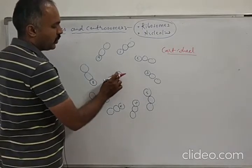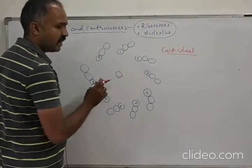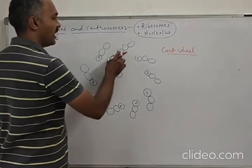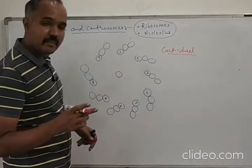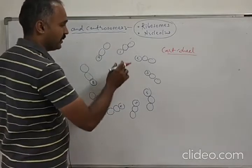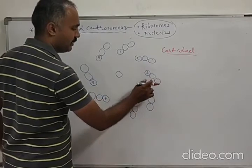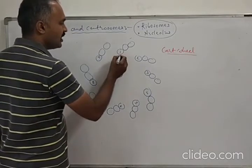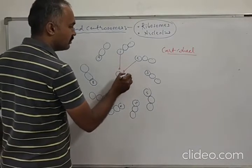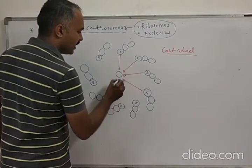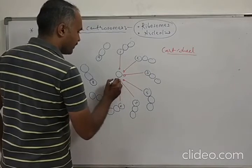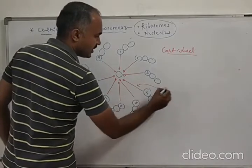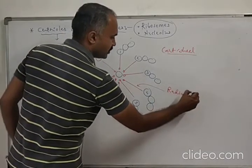In the central part a proteinaceous hub is there, known as the central proteinaceous hub. So nine peripheral triplets are there in triplet form, and each triplet is connected to the central hub via a radial spoke. This red color structure is known as the radial spoke.